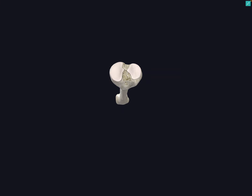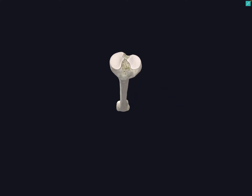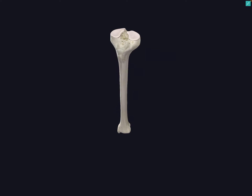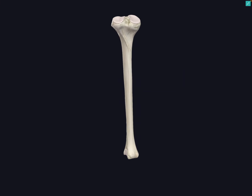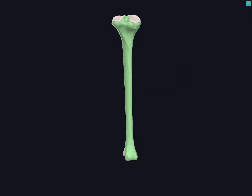Looking at the superior surface, there are two articular surfaces which articulate with the femoral condyles. There is a raised intercondylar eminence — a raised portion of bone between the two condyles when viewed superiorly — bordered by medial and lateral intercondylar tubercles. Posteriorly, there is a very prominent soleal line, which provides an area for the attachment of muscles of the posterior tibia.